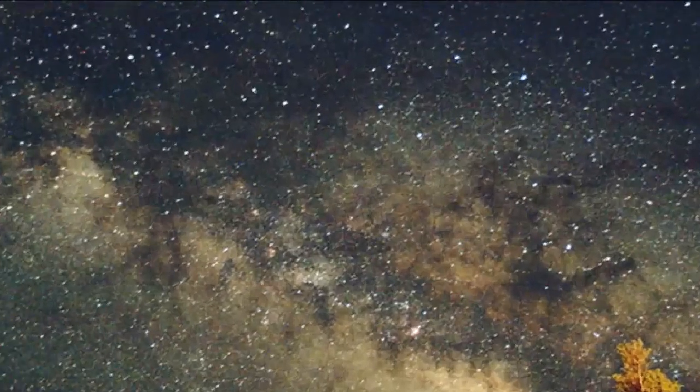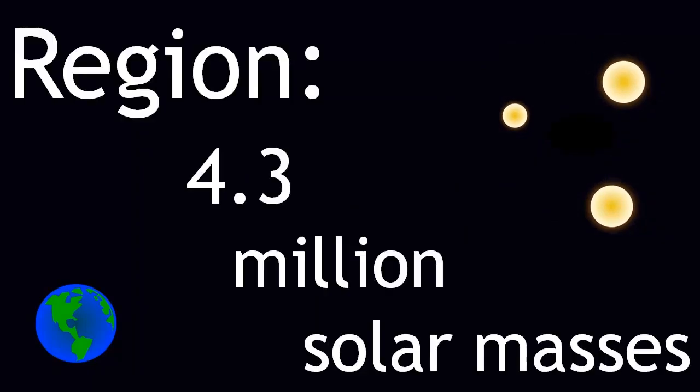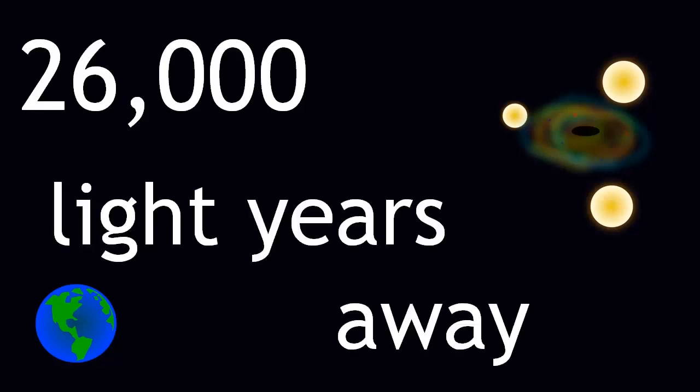Additionally, we see stars at the center of the Milky Way galaxy rapidly orbiting a dark area of space at relativistic speeds. The velocity of these stars tells us the region has a mass of 4.3 million solar masses. The only rational explanation for these orbital periods is that a supermassive black hole resides at the center of our galaxy, a mere 26,000 light years away.